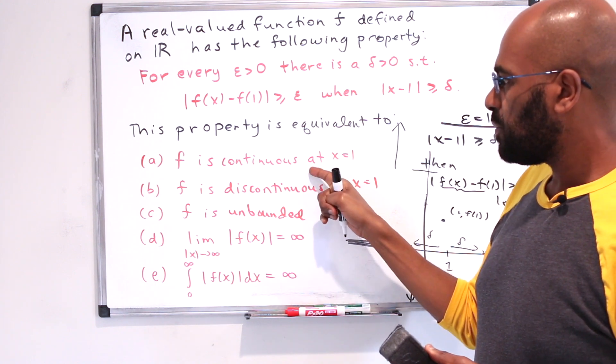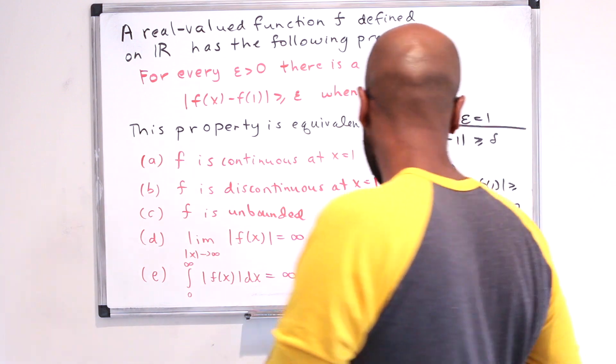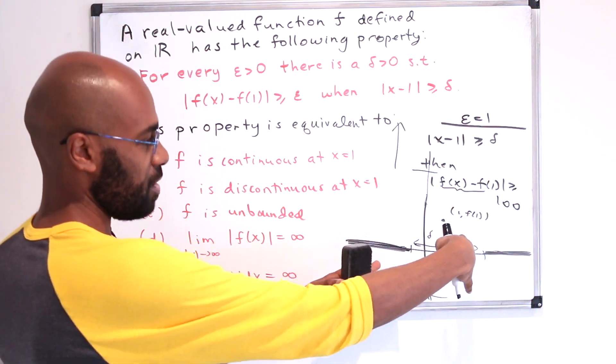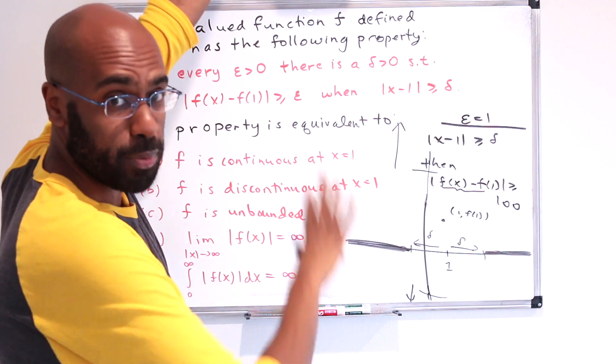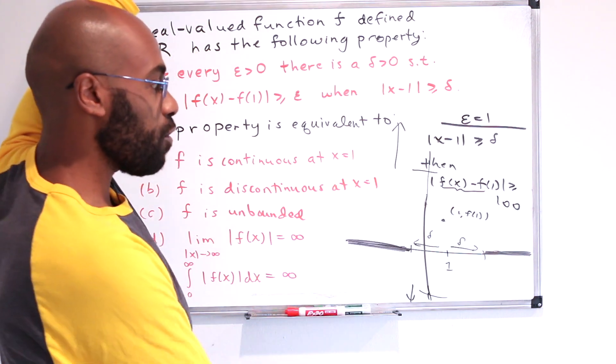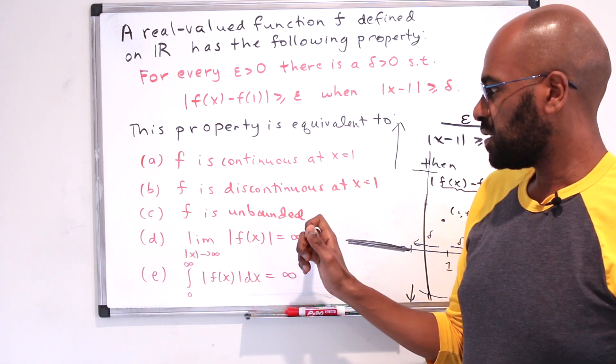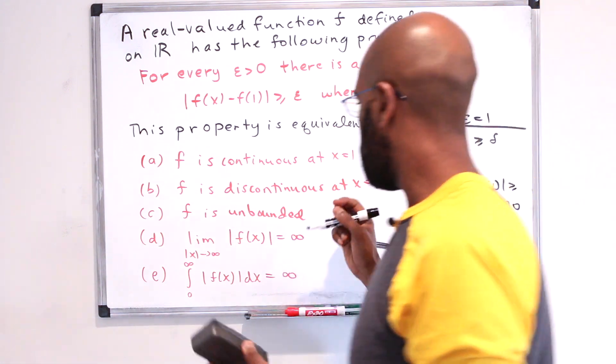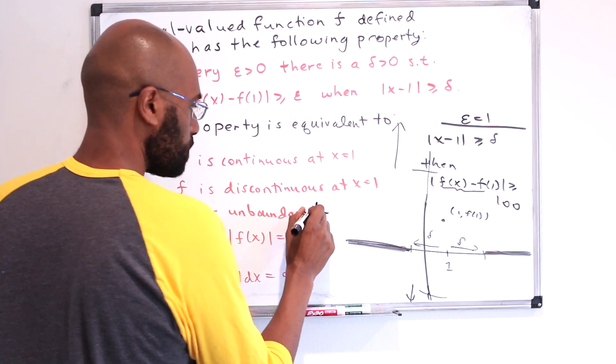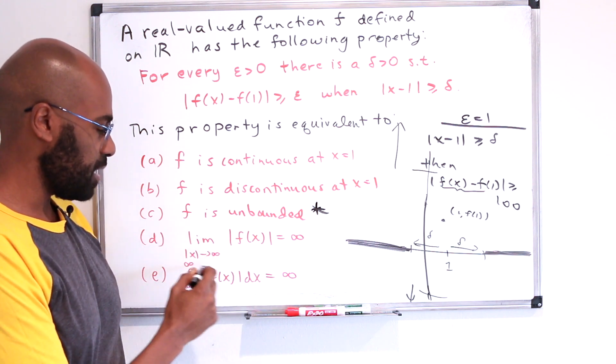Okay, so now we can get an interpretation of what that is in terms of the choices. But it doesn't seem like continuity or discontinuity at 1, because what is happening is we're talking about values that are far away from 1 and how f either blows up positively or negatively. You might think that this implies that f is unbounded, so that's a possible choice.